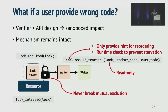Then one might ask: what if a user provides wrong code? Thanks to the verifier and the API design, Synchrod prevents such users from crashing the kernel. Even if we provide APIs to the user, the underlying mechanism remains intact. User's custom logic only provides a hint for reordering but does not change the basic mechanism to acquire and release a lock. In addition, the lock pointer passed to the API is limited as read-only data. As a result, users can never break mutual exclusion while still having the power to control the kernel lock.